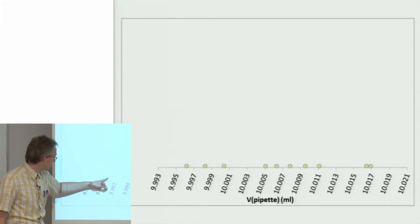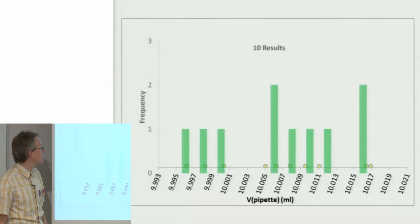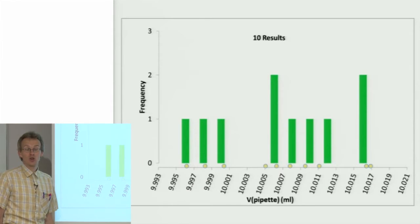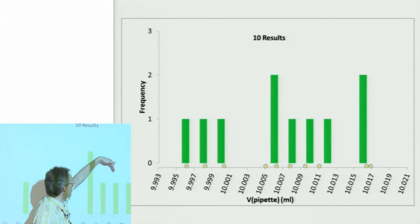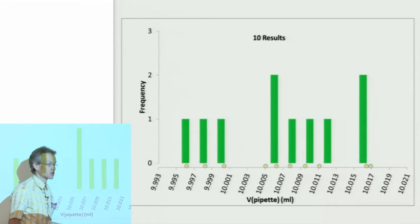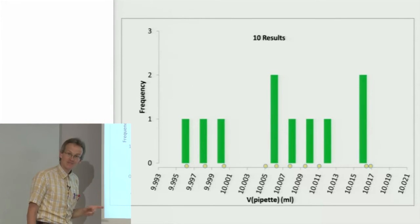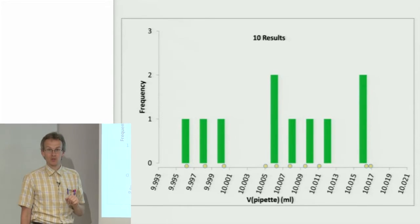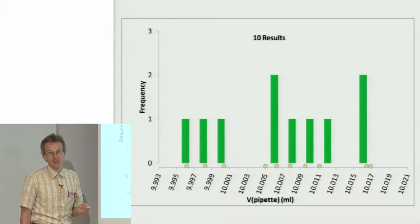If we now plot these values as a histogram, then we see something like this. This histogram in principle should resemble the beautiful bell-shaped curve that we just saw, but we see that it is in fact very different. The reason is obvious. We have only made 10 measurements up to now, and 10 measurements is too small a number to get the normal distribution curve.